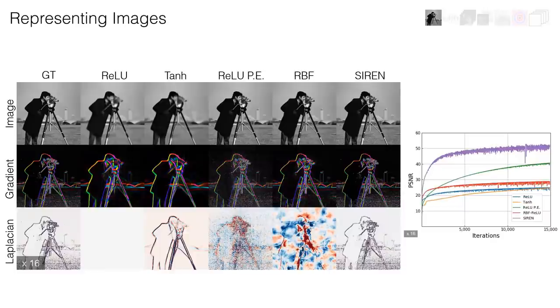Not only does SIREN achieve a 10 dB higher PSNR than all baseline approaches, and converges significantly faster, as shown on the convergence plot on the right, but it also is the only architecture that faithfully reproduces the first and second spatial derivatives of the image.